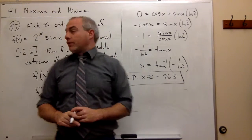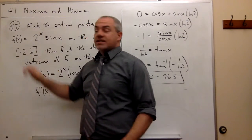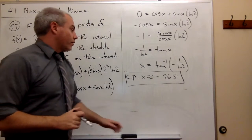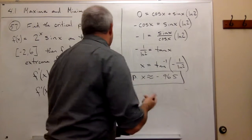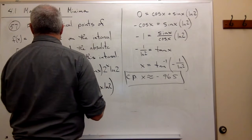And I have two endpoints, being negative 2 and 6, which I need to test. And I need to test those in the original function. So let's go back over here.